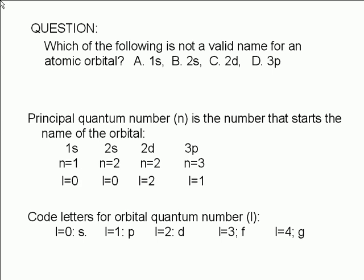Therefore, the orbital quantum number L for the choices given here are 0 for 1s, 0 for 2s, 2 for 2d, and 1 for 3p.